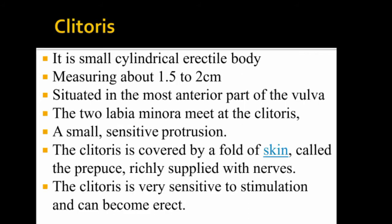The clitoris is a small cylindrical structure, about 1.5 to 2 cm. It is one of the most anterior parts of the external genitalia. The two labia majora meet at the clitoris. It is a small sensitive protrusion.